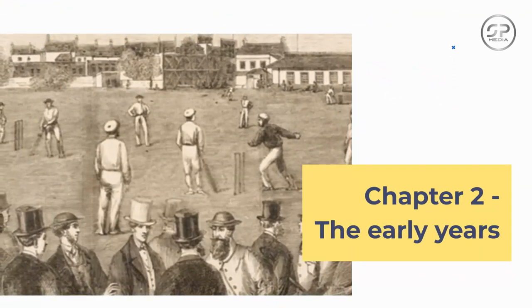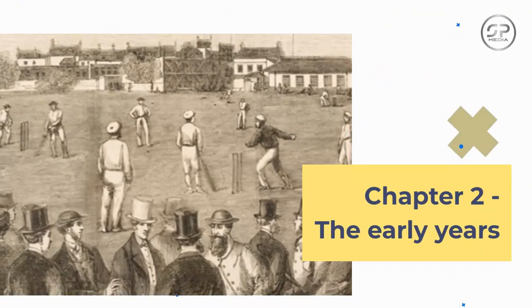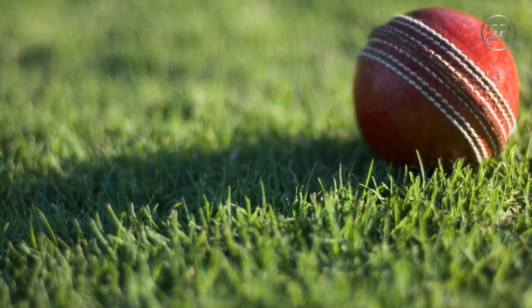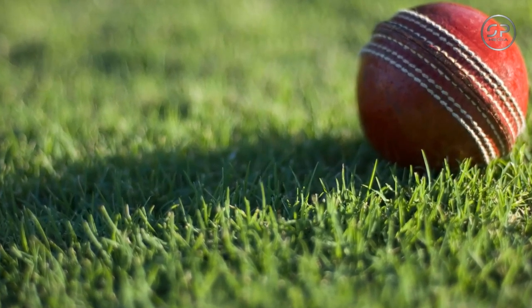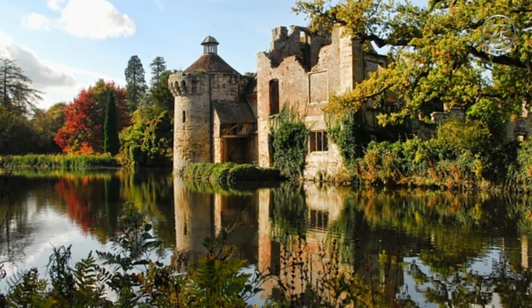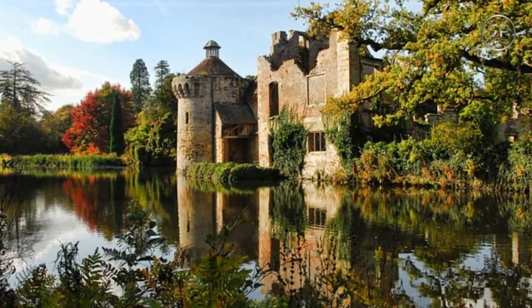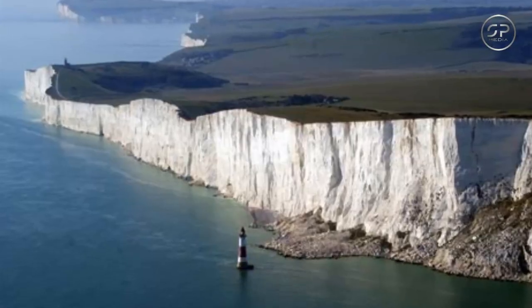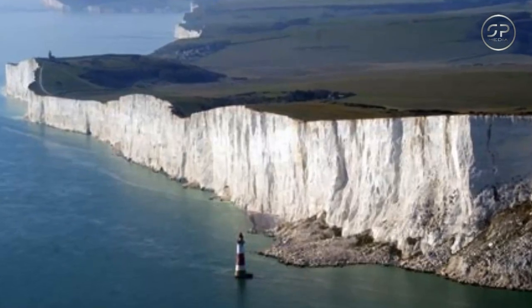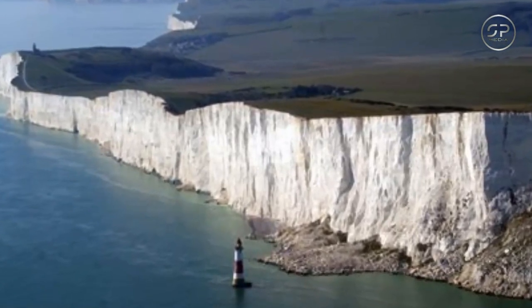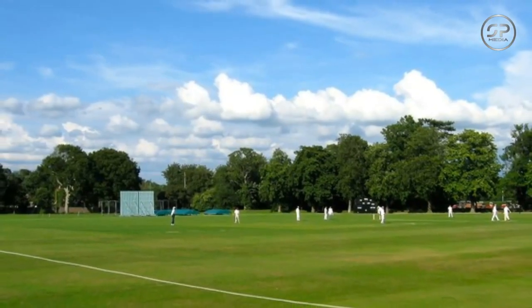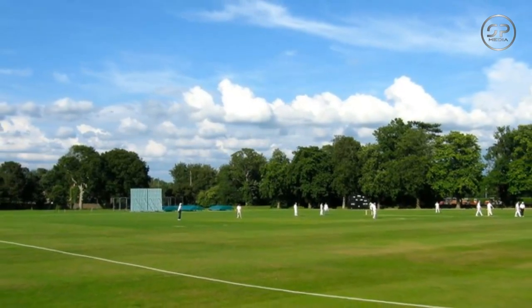Chapter two: the early years. A 50-guinea wager was made in Sussex for an 11-a-side game that was first mentioned in 1697. It is likely that a set of rules regulating the conduct of the game existed around this time, but the earliest publication of such regulations is dated 1744.